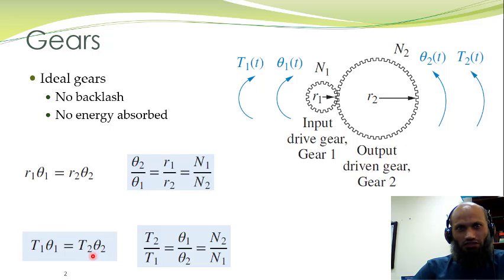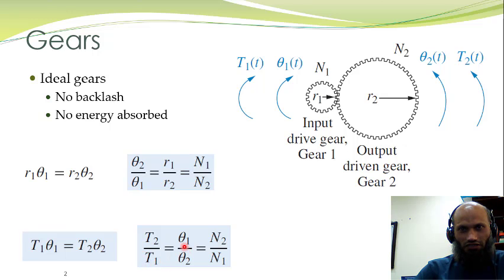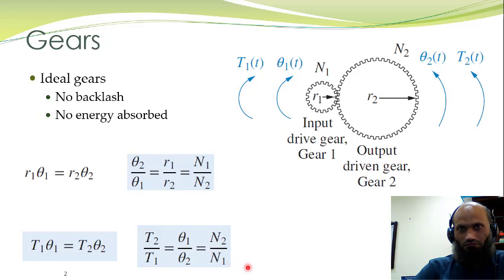This expression can be rearranged to write T2/T1 = theta1/theta2, which by the previous expression results in N2/N1.